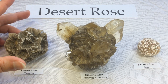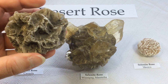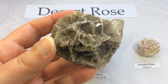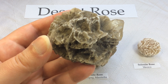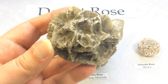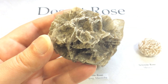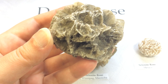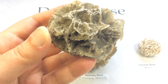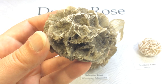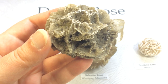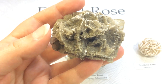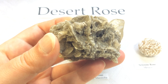The desert rose can have other nicknames as well: sand rose, rose rock, selenite rose if it's known to be made of selenite, gypsum rose, and that could include selenite roses as well as barite roses.